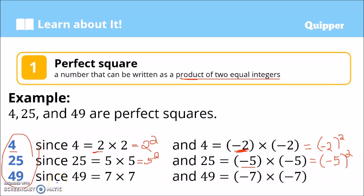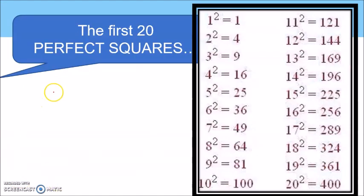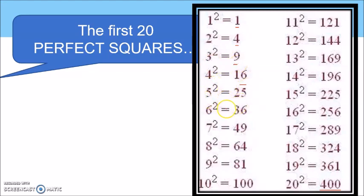Aside from those examples, there are many more perfect squares. The first 20 perfect squares are 1, 4, 9, 16, and so on up to 400. So: 1 times 1 is 1, 2 times 2 is 4, 3 times 3 is 9, 4 times 4 is 16, 5 times 5 is 25, 6 times 6 is 36, and so on.